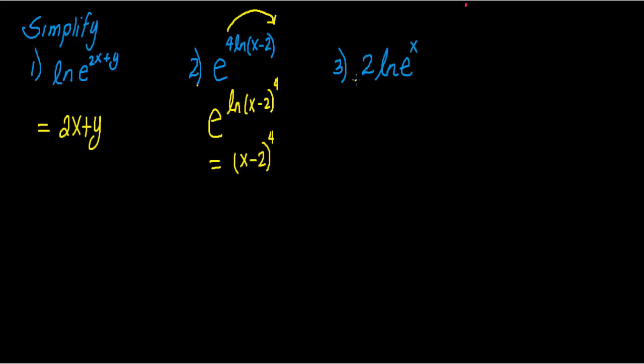For number 3, I have 2 times the natural log of e to the x. Now there are two options you can do here. Let's do letter A. I can just leave that 2 there and it's being multiplied by the natural log of e to the x. This part, I know, is equal to x. So you will get 2x as your simplification for this expression.